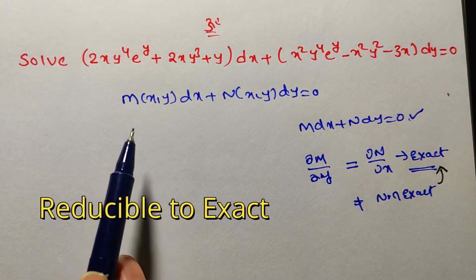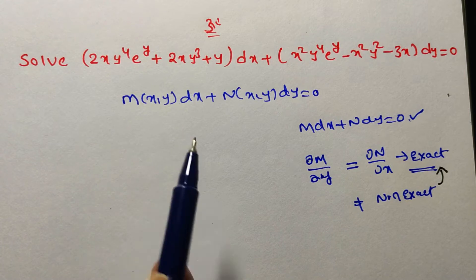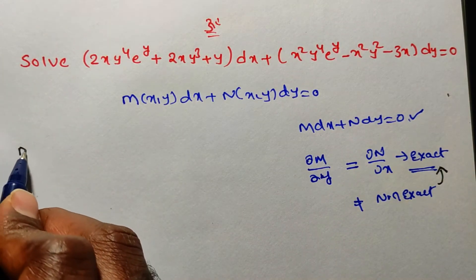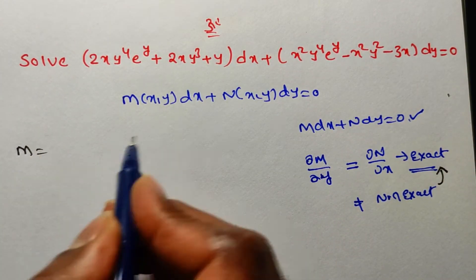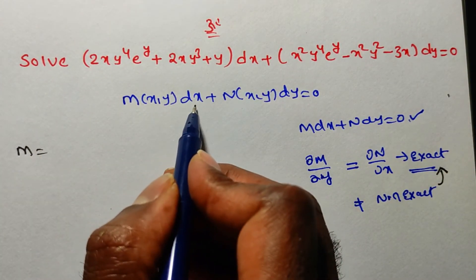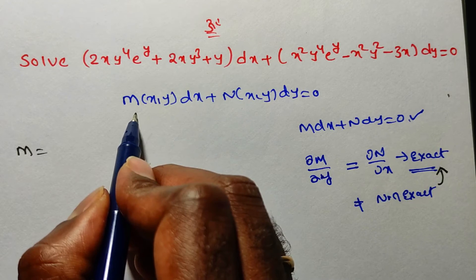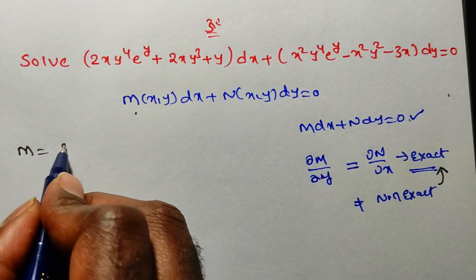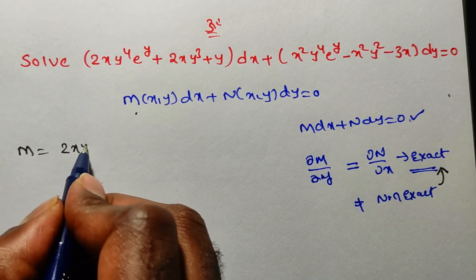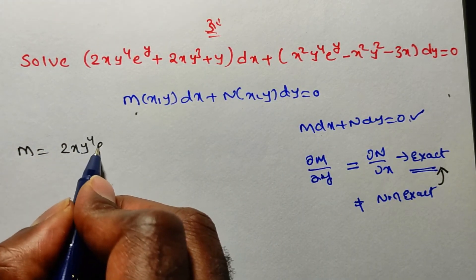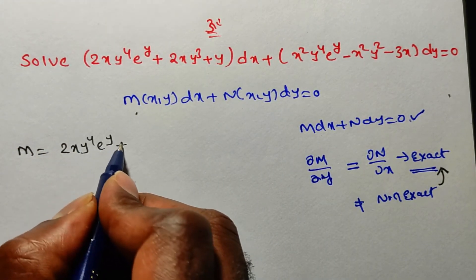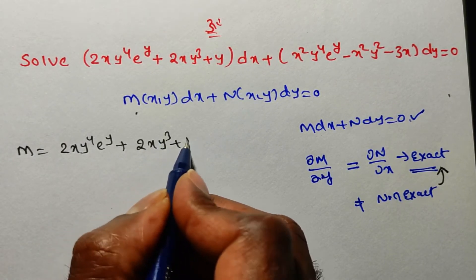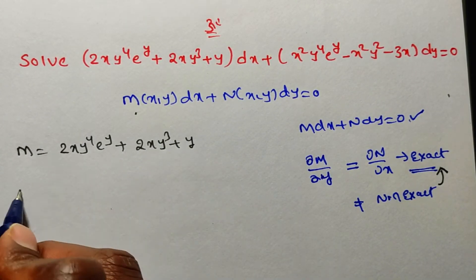First, we verify exactness. Comparing the given problem, the coefficient of dx gives M = 2xy⁴eʸ + 2xy³ + y. Now we need to find ∂M/∂y.